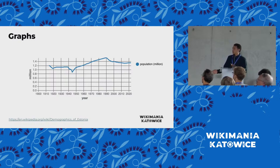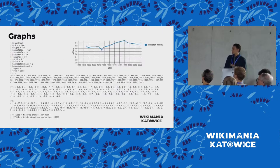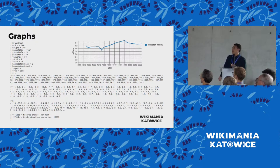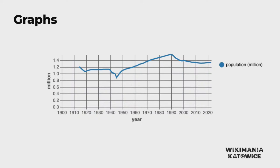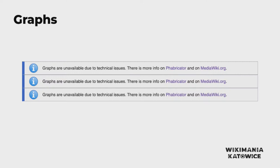Let's look at a specific example. This is from a real article — the Demographics of Estonia article on English Wikipedia. This is what the graph would look like: it's a population change over time. This is what the Wikitext code looks like to generate it. It's using a template called 'chart.' The top half of the slide is configuring the graph, and the bottom half is the data that's actually powering the graph, all inline. Maybe this is very familiar for an editor who's constantly editing with these types of templates, but for someone just scrolling through the article making an edit somewhere else, this might be a little bit daunting — kind of a thing you don't want to touch too much.